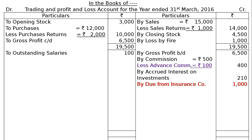On the expenditure side: Adjustment A shows Salary Rs. 100 outstanding. Since there are no salaries in the trial balance, this outstanding amount is shown directly in the Profit and Loss Account debit side and under Current Liabilities in the Balance Sheet. Next, Outstanding Interest on Overdraft Rs. 100 — this is also shown under Current Liabilities.